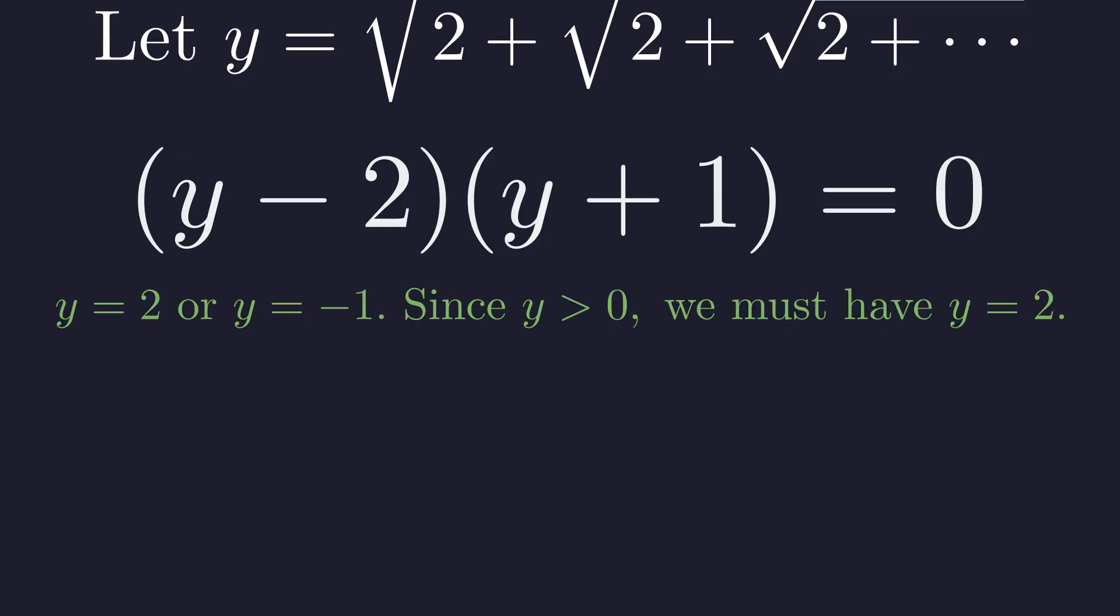But y is a principal square root, so it can't be negative. The infinite radical evaluates to exactly 2. The original equation becomes 2 equals 2, which checks out.